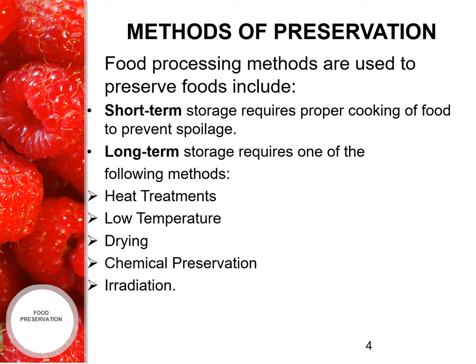Let's see what are the methods of preservation. Food processing methods are used to preserve foods, which include short-term storage methods which require proper cooking of food to prevent spoilage. Long-term storage requires one of the following methods: heat treatment, low temperature, drying, chemical preservation and irradiation.